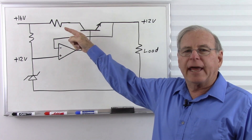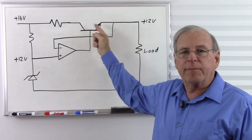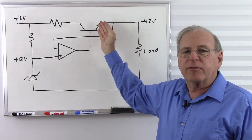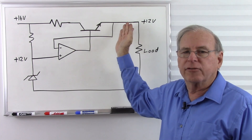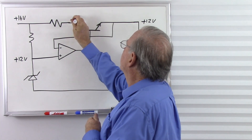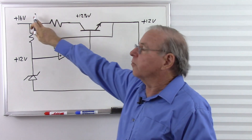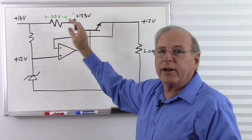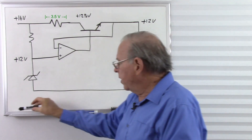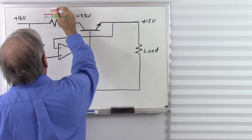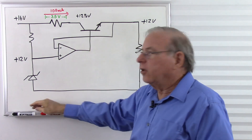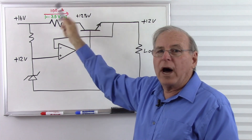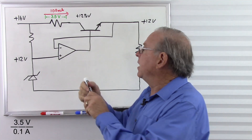We need to choose this resistor such that, at the desired current limit, we have 12 volts at the collector of the pass transistor — actually about 12.5 volts, accounting for roughly half a volt across the transistor. So we're starting with 16 volts and losing about 3.5 volts to reach 12.5 volts. Let's set our desired current limit to 100 milliamps. We have 3.5 volts at 100 milliamps, so the required resistance is 35 ohms.